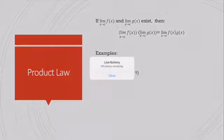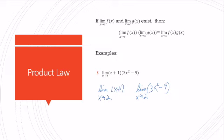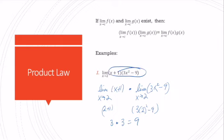The product law says that if the limit of two functions exists, then their product's limit equals the product of their individual limits. So instead of multiplying everything out first, I can take the limit as x goes to 2 of (x+1) and multiply it by the limit of (3x² − 9). Substituting: (2+1) = 3, and 3(4) − 9 = 3. The final answer is 9. If you foiled out the binomials and took the limit of the expanded polynomial, you'd get the same answer.